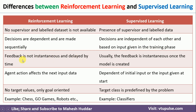In reinforcement learning, feedback for a particular action is not available immediately. For example, if you want to go from the initial state to the goal state, unless and until you reach that goal state, you are not going to get feedback on whether you have reached it or not. So that feedback is delayed by time. But in supervised learning, the feedback is instantaneous once the model is created — you give a new example to the model and it gives you the result immediately.